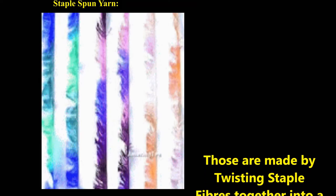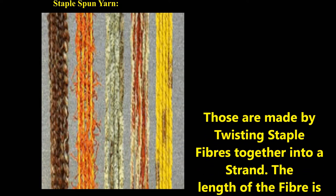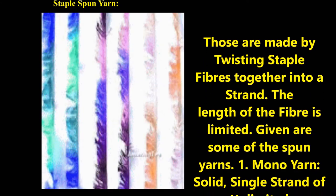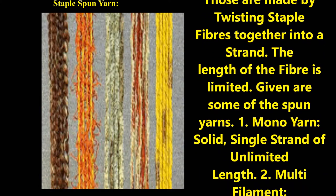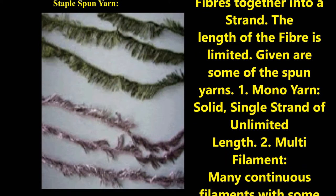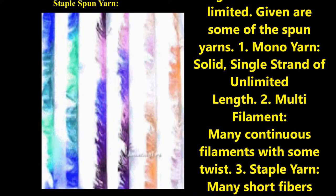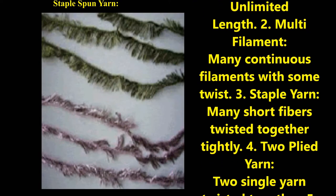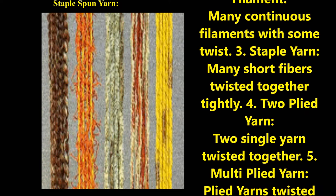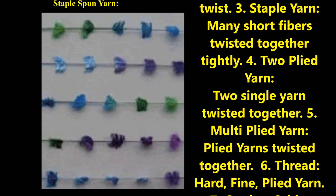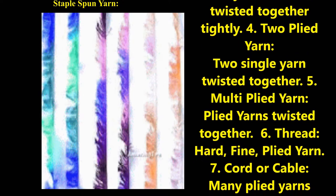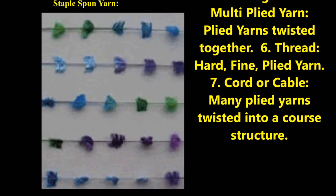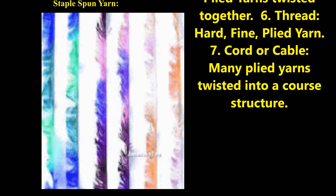Staple spun yarns are made by twisting staple fibers together into a strand. Types of spun yarns include: mono yarn, which looks like a solid single strand of unlimited length; multiple filament, which has many continuous filaments with some twist; staple yarn, which has many short fibers twisted together tightly; two-ply yarn, which is two single yarns twisted together; multi-ply yarn; and thread or cord, which is many ply yarns twisted into a coarse structure.